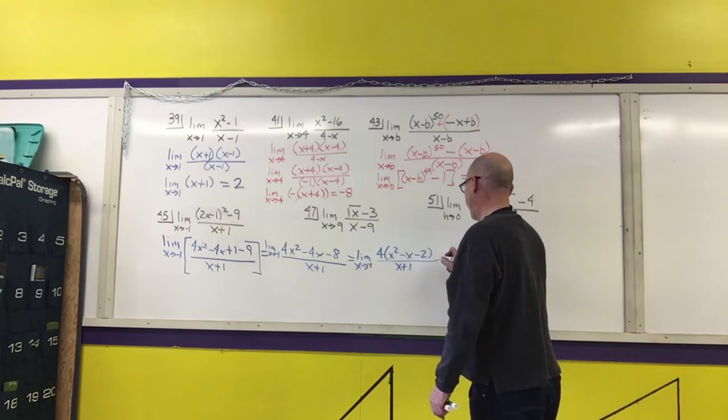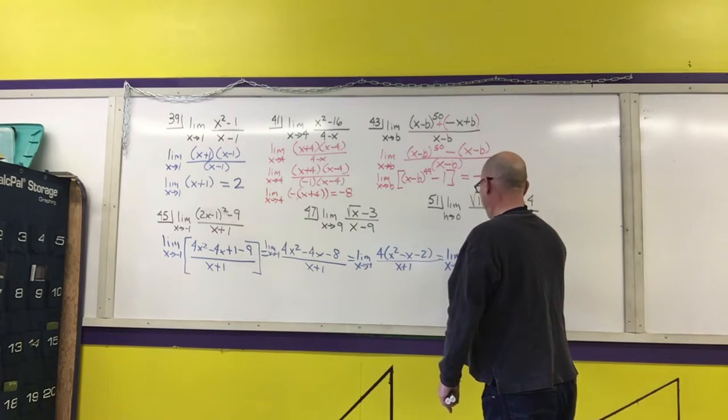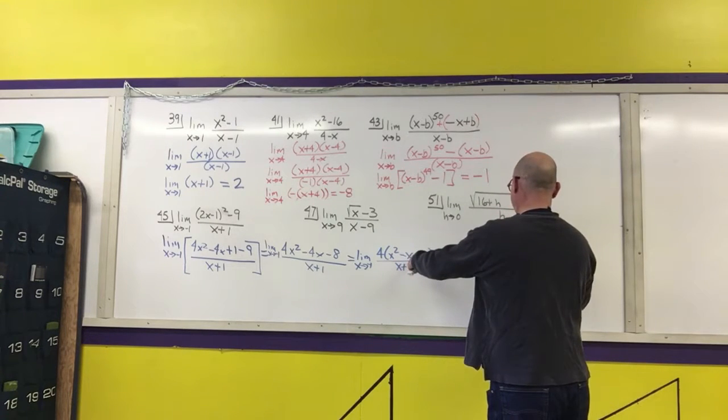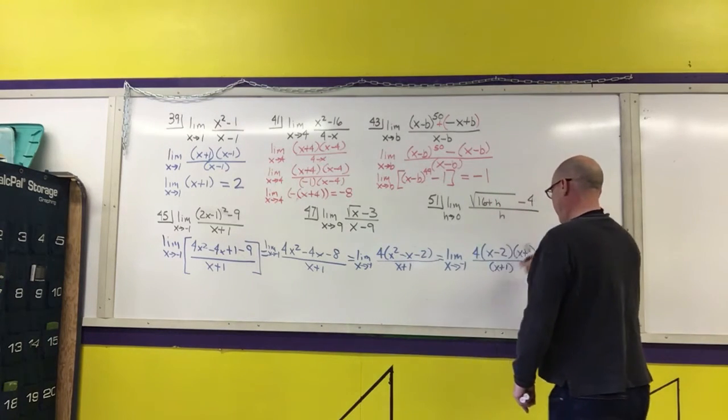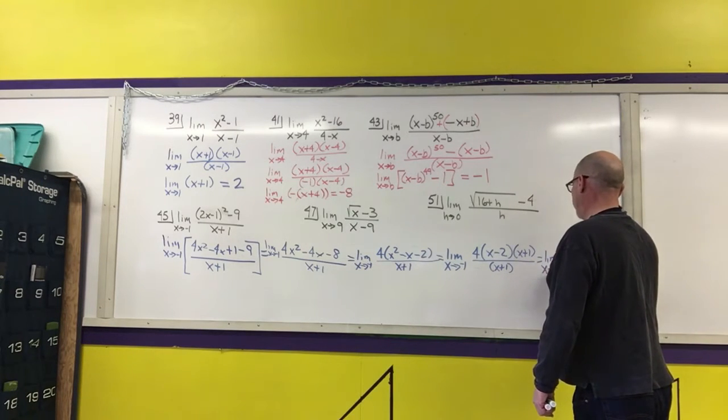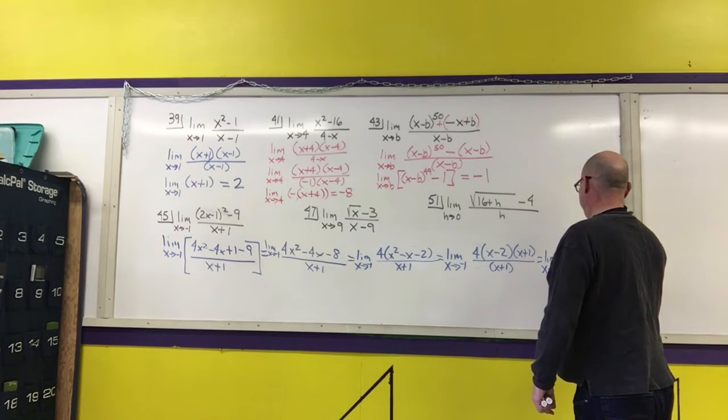So I'm going to factor out the 4 as x approaches negative 1 of 4 times x squared minus x minus 2 over x plus 1. This quadratic factors, so I get the limit as x approaches negative 1 of 4 times x minus 2 times x plus 1 over x plus 1.